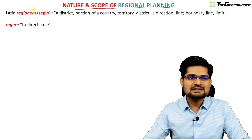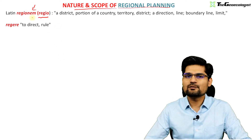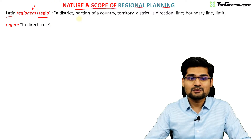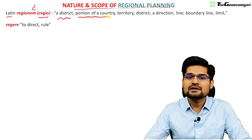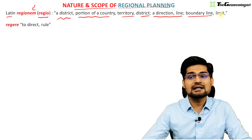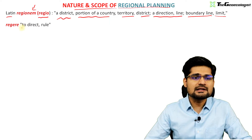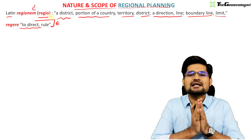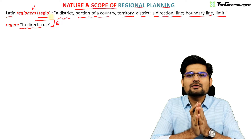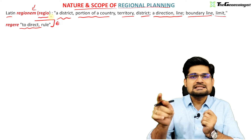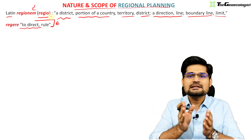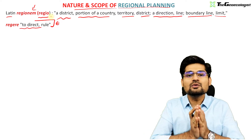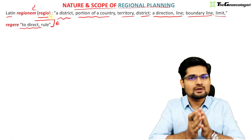The first word to observe is 'regionem' or 'regio,' which comes from Latin origins and means a district, a portion of a country, territory, a direction, boundary line, or limit. The word 'rigor' basically means to direct or to rule — talking about a particular place delineated through boundary-making, specific to rule.